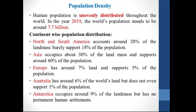So what is population density? As we all know, human population is unevenly distributed throughout the world. In 2019, world population is about 7.7 billion. Let's have a look at the continent-wise population distribution. In North and South America, 28% landmass supports 18% of the population. Asia has 30% of the landmass and supports 60% of the population — double population than the landmass. Europe has 7% of landmass and supports 5% of population. Australia has 6% of landmass but does not even support 1% of population. Antarctica has 9% of landmass but has no permanent human settlement.